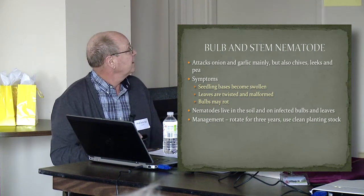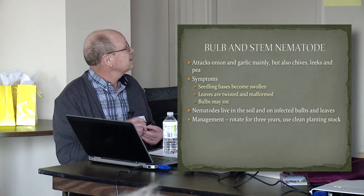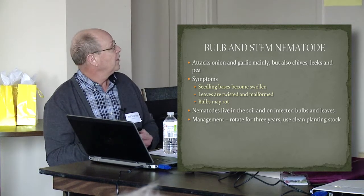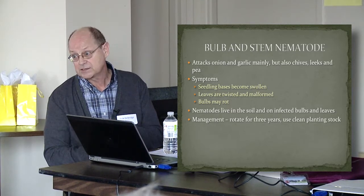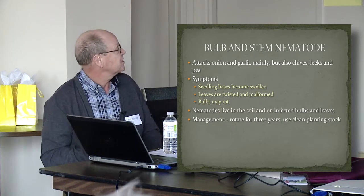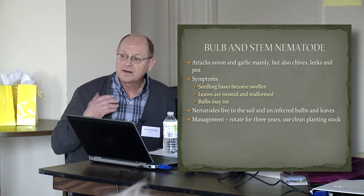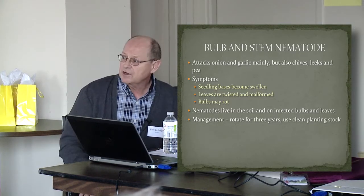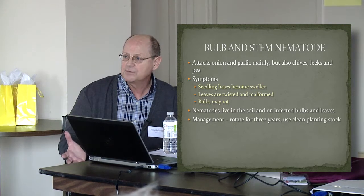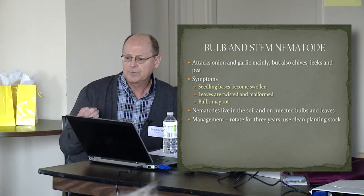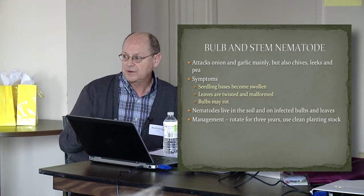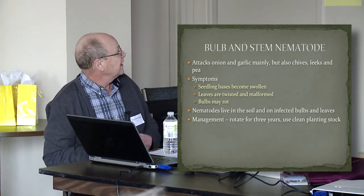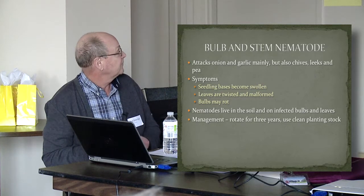The symptoms are that seedling bases become swollen, and leaves become twisted and malformed, similar to what was shown with the virus. These nematodes can live in the soil, but they also come in on the bulbs — they're in the bulb tissue and the old dried-up foliage of the garlic. That's how you can introduce them with your planting stock very easily.